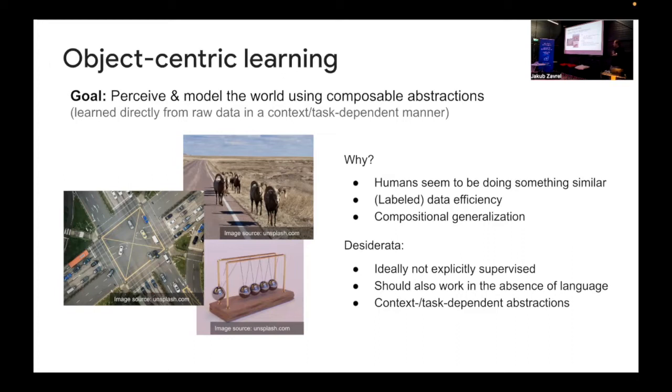Now ideally these kinds of models shouldn't be explicitly supervised. We know at least in humans that these kinds of representations can emerge without supervision or direct supervision. They can also emerge in the absence of language. So we focus a lot on language and multimodal perception these days but a lot of the things we understand about the world we understand also without language, especially if you look at the animal kingdom. Also abstractions and objects are not necessarily clear cut, these are typically context and task dependent abstractions.